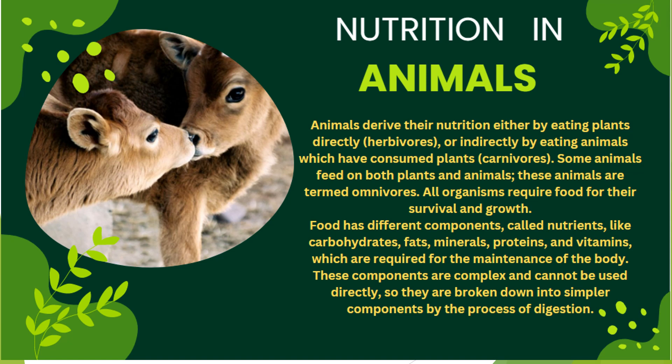We all know we need food to survive. Animals derive their nutrition either by eating plants directly — these are herbivores — or indirectly by eating animals which have consumed plants — carnivores. There are also omnivores. These categories are clear.